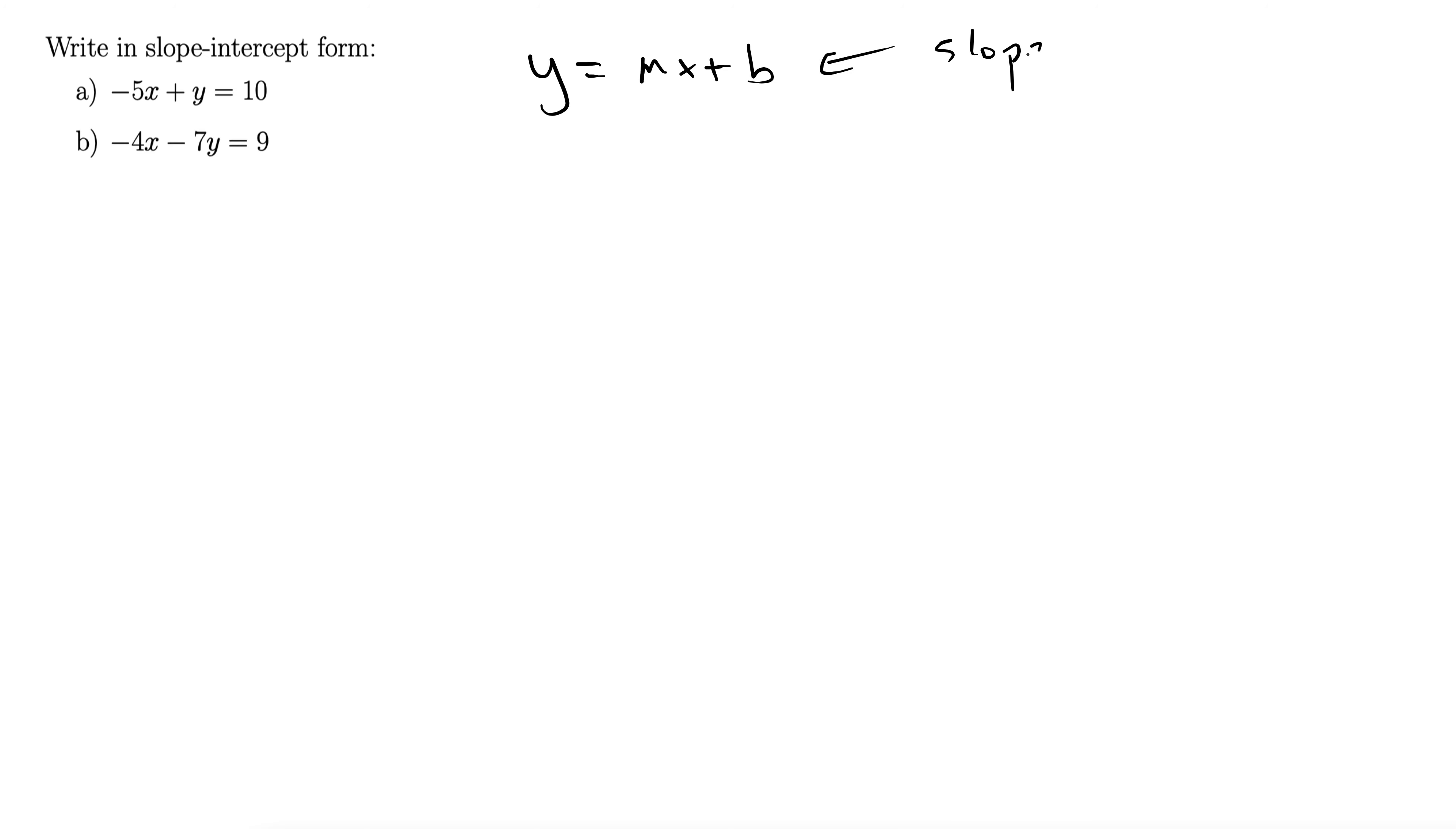Slope-intercept form. Why do we call it slope-intercept form? Well, right here, this m - this is the slope.